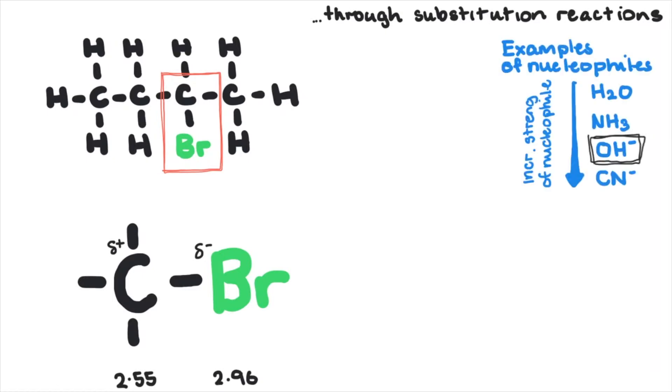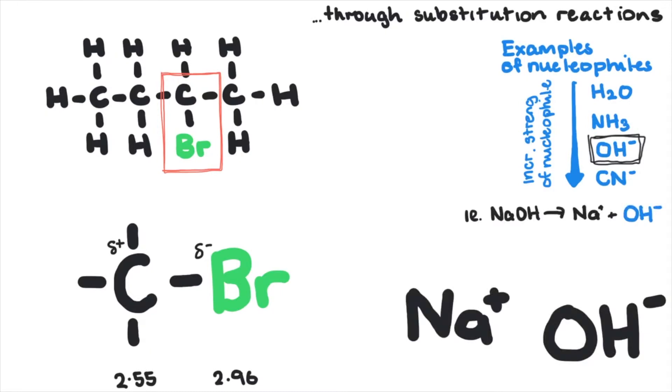A nucleophile like the hydroxide ion, which are ions or groups of atoms that are attracted to delta positive regions, will realistically be in the form of sodium hydroxide.